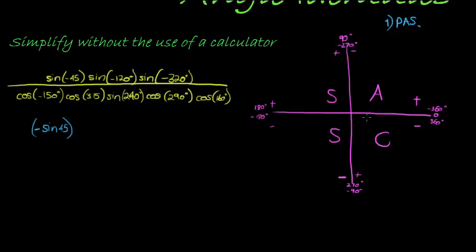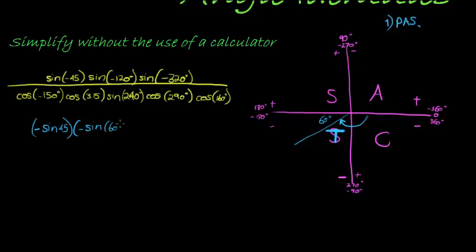Sine of negative 120 — negative 120 is in the third quadrant. It's 60 degrees short of negative 180, so since in the third quadrant sine is negative, this becomes negative sine of 60 degrees.